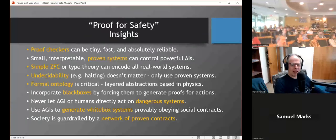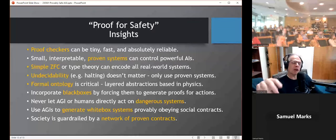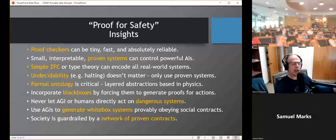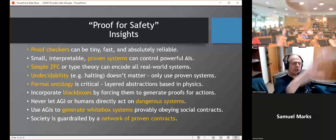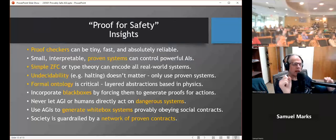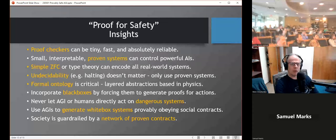We can incorporate black boxes, like powerful large language model AGIs, by forcing them to generate proofs of whatever actions they want to take, or forcing them to generate much smaller interpretable formal systems, so that maybe you train something on a big, complicated dataset, the whole internet, but you never use that directly to do anything dangerous. You force it to generate something for which you have and to generate the proofs of adherence to contracts. And so we never let AGIs or humans act directly on dangerous systems. We always have some intermediary that is provable and testable that guarantees that it obeys whatever contracts we have governing that. We use AGIs to generate white box systems, provably obeying social contracts, and society is guardrailed by a network of these proven contracts.